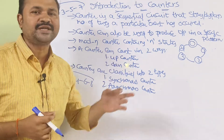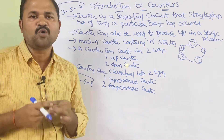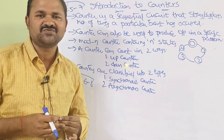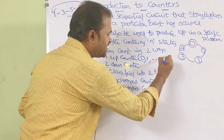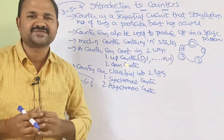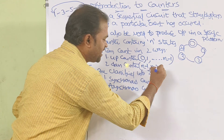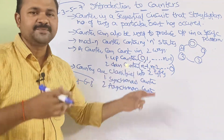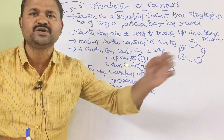A counter can count in two ways: the first is an up counter and the second is a down counter. An up counter counts in the upward direction — starting from 0, then 1, and so on up to n minus 1. A down counter starts from n minus 1, then n minus 2, and so on down to 0. So up counter means ascending order, and down counter means descending order.